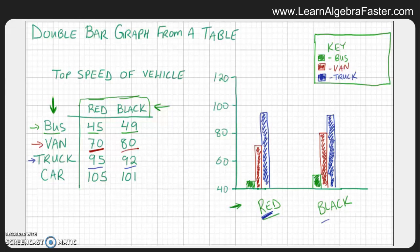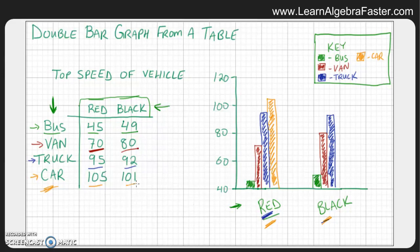Let's go to a different category, which is the car. And let's put that on our key. This orange color is going to be the car. So let's look at red cars, which is 105. And last but not least, we'll look at black cars, which is here. And that's 101.